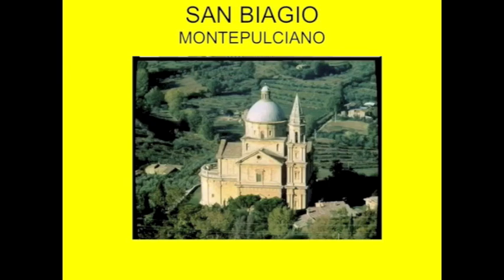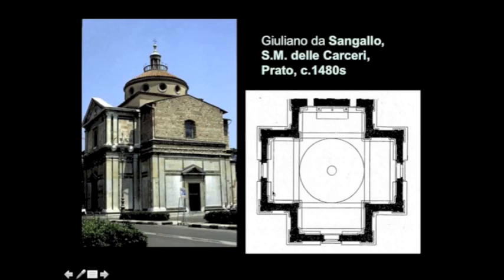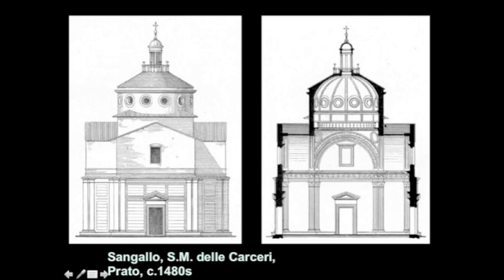I want to show you one Cinquecento centralized church as a point of comparison for the Quattrocento ones we looked at, and that is San Biagio in Montepulciano. Montepulciano is a Tuscan town with magnificent wine — you could pretend to go for the architecture, but I'd urge you to stay for the wine. By now you should be familiar with what these long-distant views of ideal centralized churches look like, because the only ones that get built are out in the middle of nowhere or at the edge of town. That's the case with San Biagio — Montepulciano is a hill town, and at the base of the hill you have this astonishingly beautiful church by Antonio Sangallo, not the same Sangallo as Giuliano who did the Quattrocento church we saw last time.